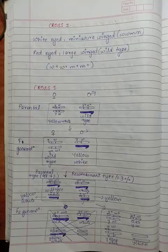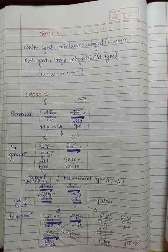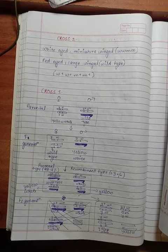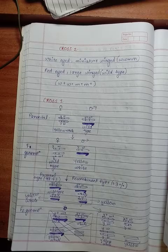Cross 2: white eyed, miniature winged crossed with red eyed, large winged wild type. Genes that are tightly paired show low recombination while others that are loosely linked show higher recombination.